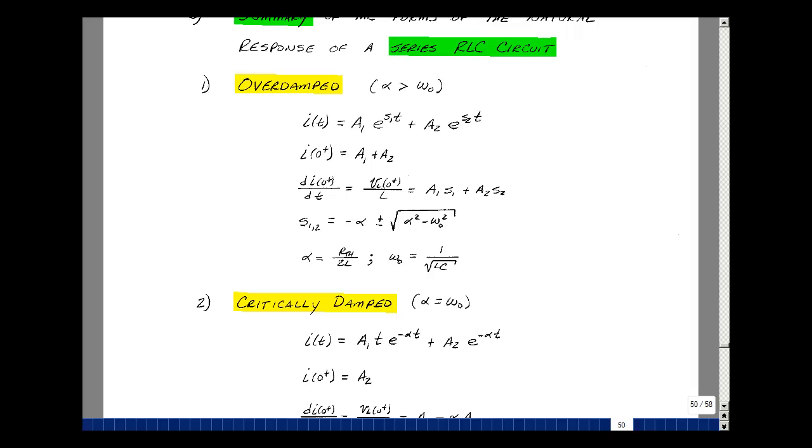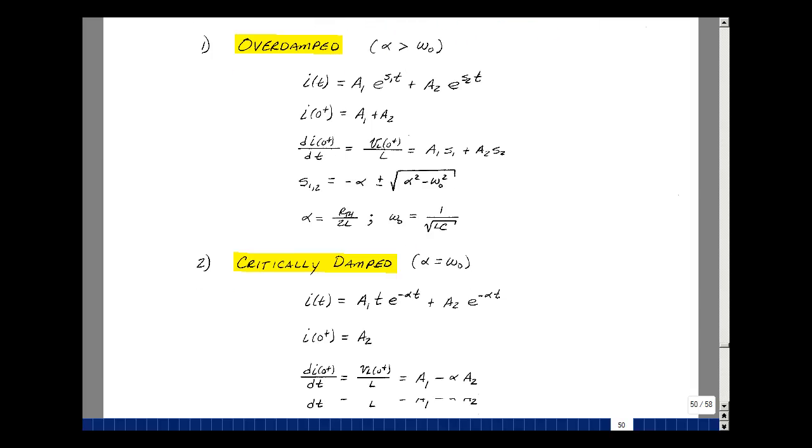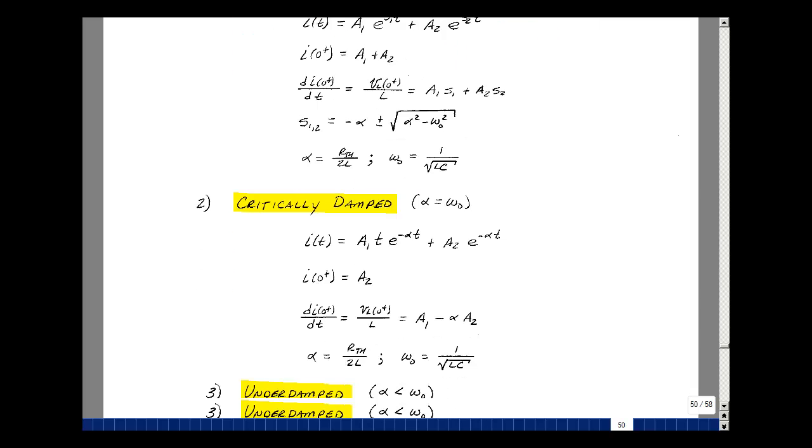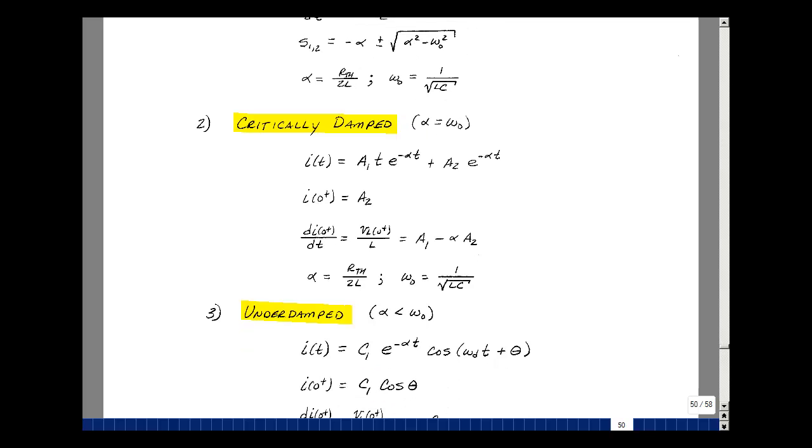So a quick place we can just go find the formulas that we need to solve a series RLC circuit problem. The value of i(t), the initial value, and related to the constants a1 and a2, and then the derivative, the value at 0 plus, and our values of S1 and S2, correspondingly alpha and omega-naught. And when alpha was equal, we had a little different form of the solution. So it was a1*t*e^(-alpha*t) + a2*e^(-alpha*t).